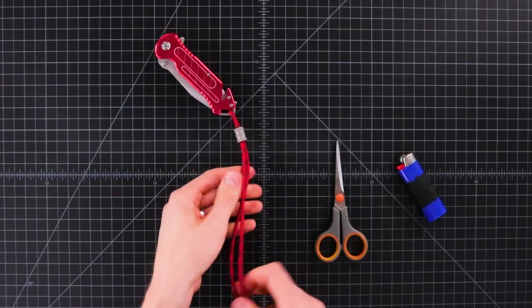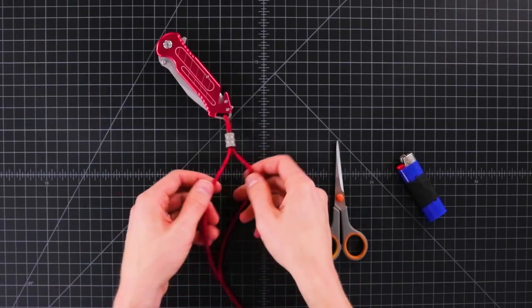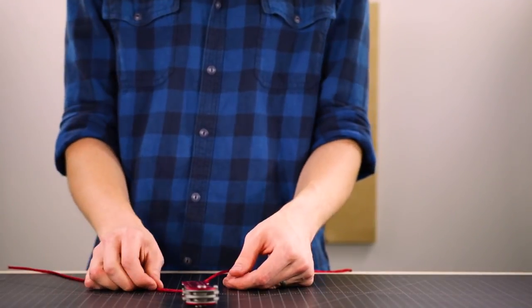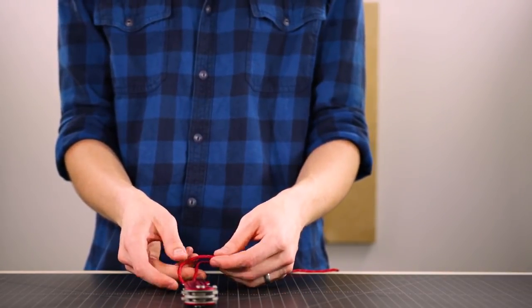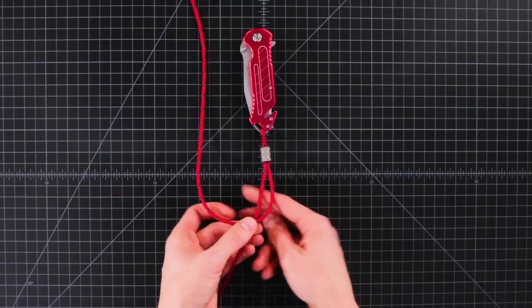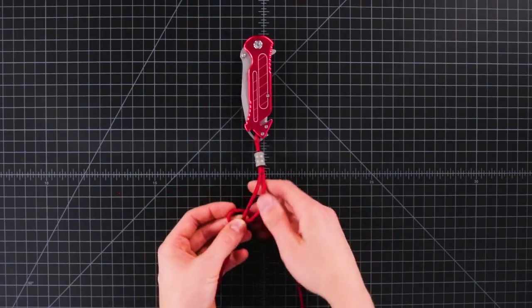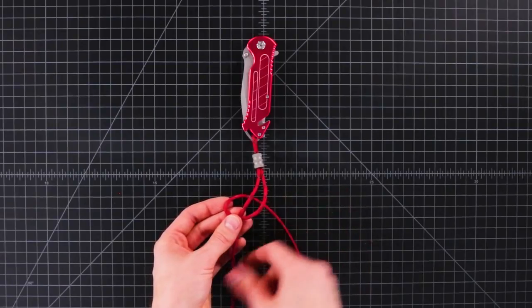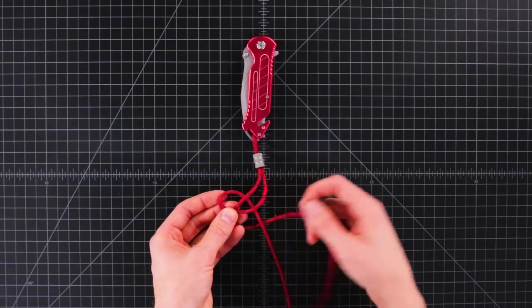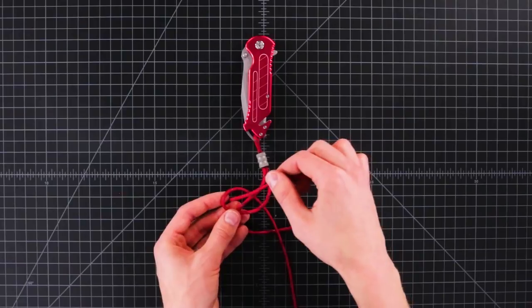And then we're going to begin our snake knots, which is the method we're going to be using today. So to make our snake knots, I'm going to make a loop with the left cord around the front and then the back like this. And then the left cord is going to go behind the back, across the front, and through this loop.